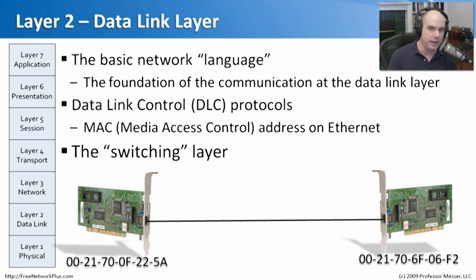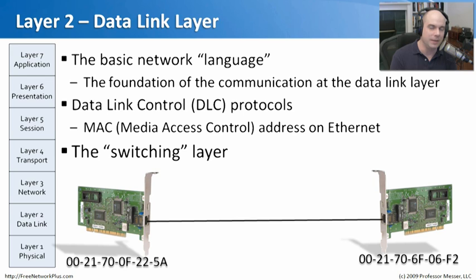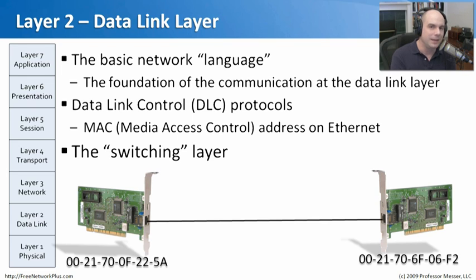Layer 2 is often called the switching layer. Network switches use the addresses at the data link layer to send traffic back and forth. When you hear a switch referred to as a 'layer two switch,' that's exactly what it means — it moves packets over the network based on these layer two MAC addresses.